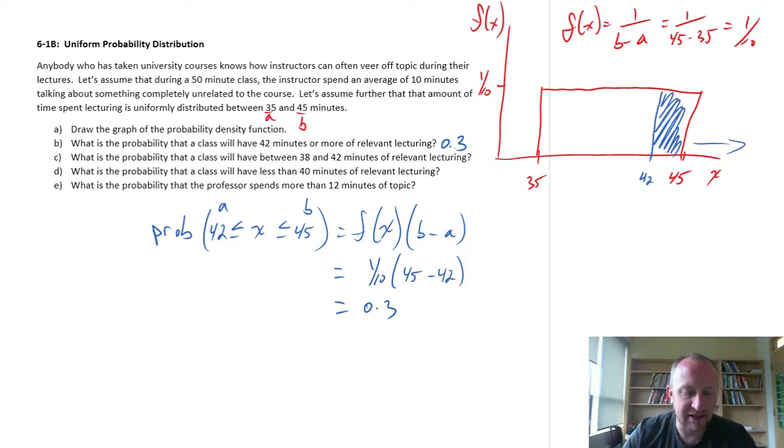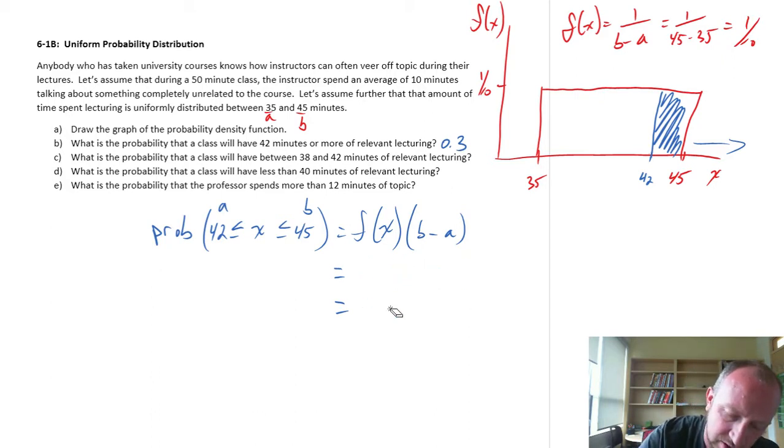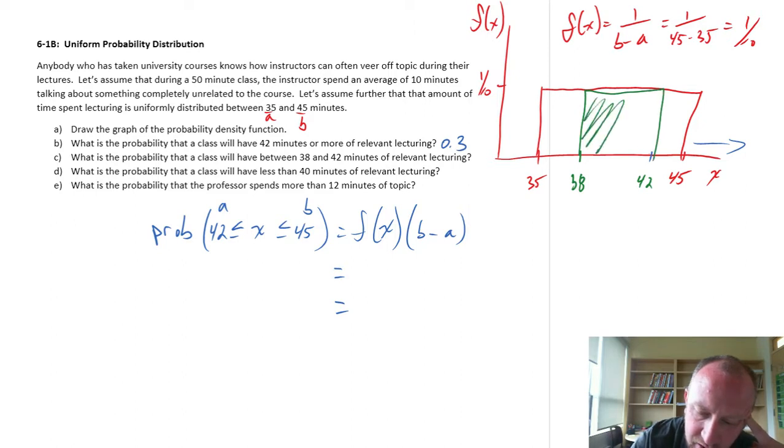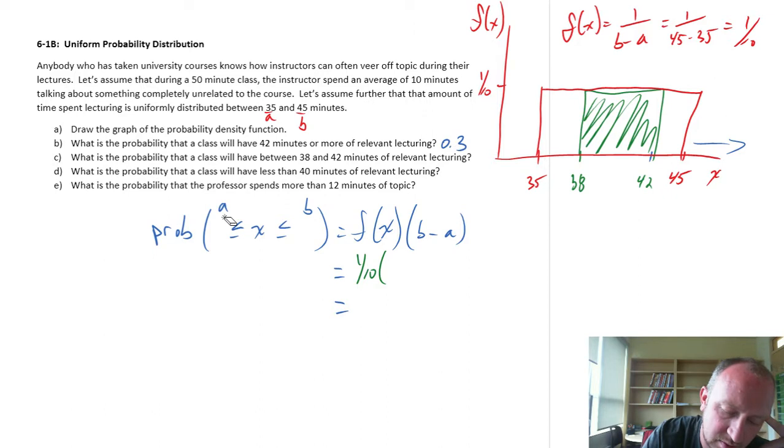What is the probability that the class will have between 38 and 42 minutes? So again, now we're looking at, let's just erase the irrelevant bits here. So we have now, let's call this 38 and here's 42. So now we're looking at this area under the curve.